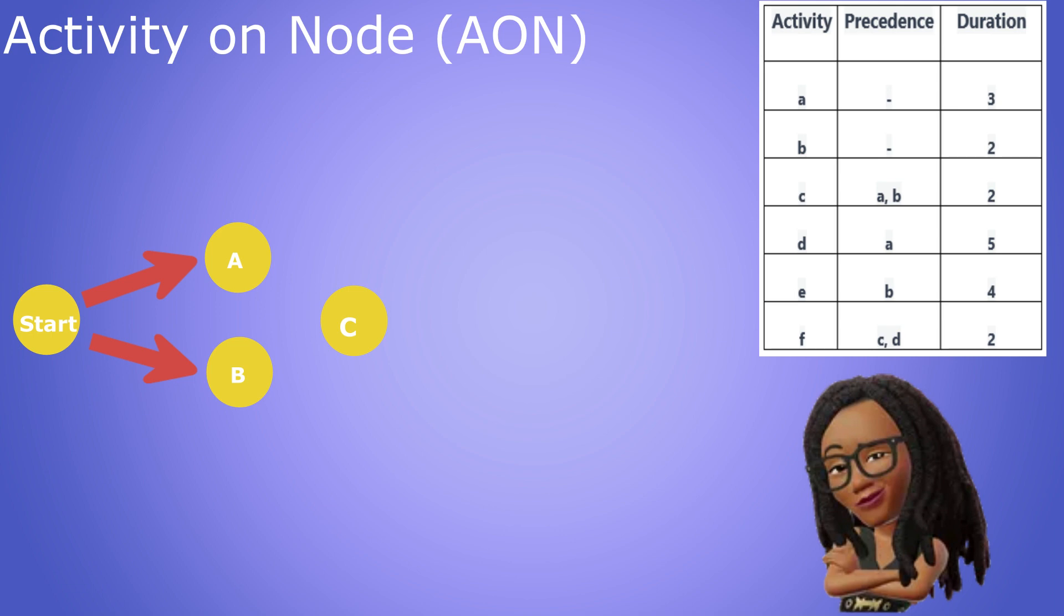C has both A and B as predecessors. D has only A as a predecessor. E has only B as a predecessor. And F has both C and D as predecessors.